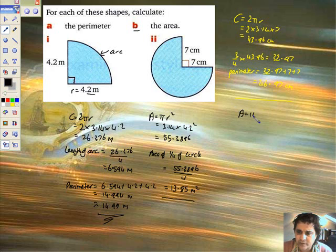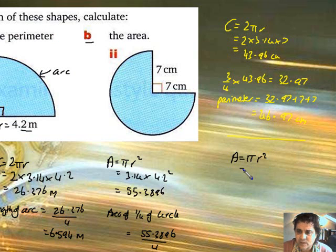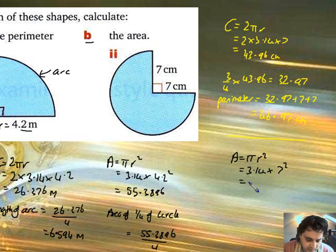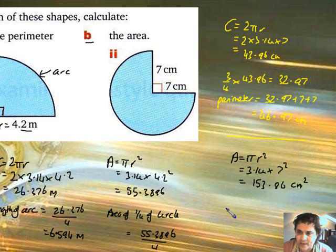Area. Quote the formula. Pi r squared. Shoving the numbers. 3.14. Radius is still 7, but now squared. Let's do it quickly. 3.14, seven sevens are 49. I'm going to put seven sevens in straight away. So 153.86. And that's centimetre square.